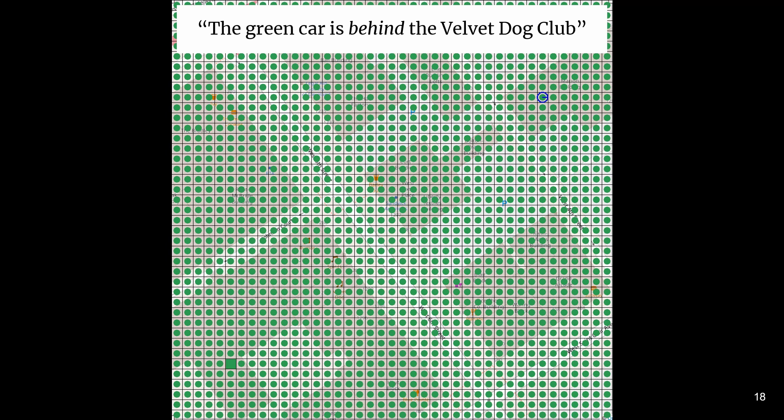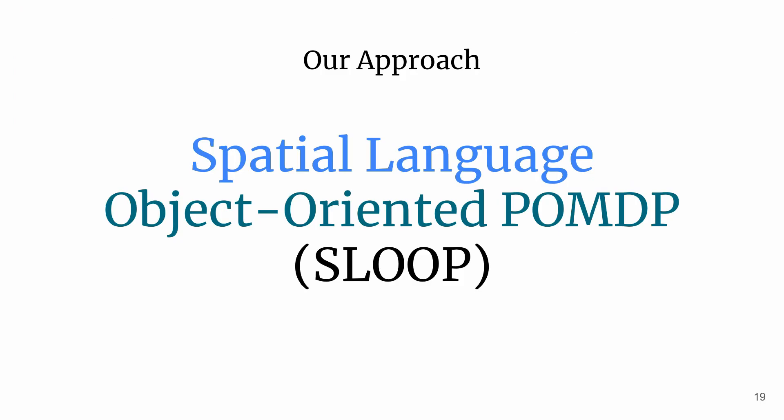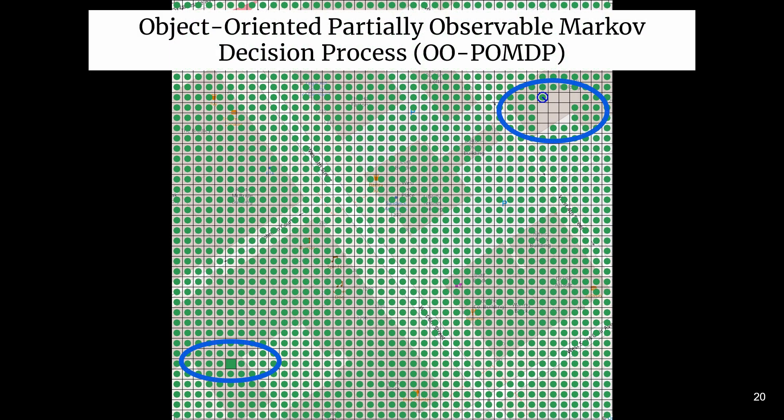To overcome these challenges, we propose Spatial Language Object-Oriented POMDP, or SLOOP, in which we represent spatial language as stochastic observations and integrate this information into the robot's belief. The robot then proceeds with the search by producing a policy via the POMDP. Object-Oriented POMDP, or OO-POMDP, is a decision-making framework suitable for modeling tasks involving objects in human environments that involve partial observability of the object's attributes. We use this to model the object search problem.